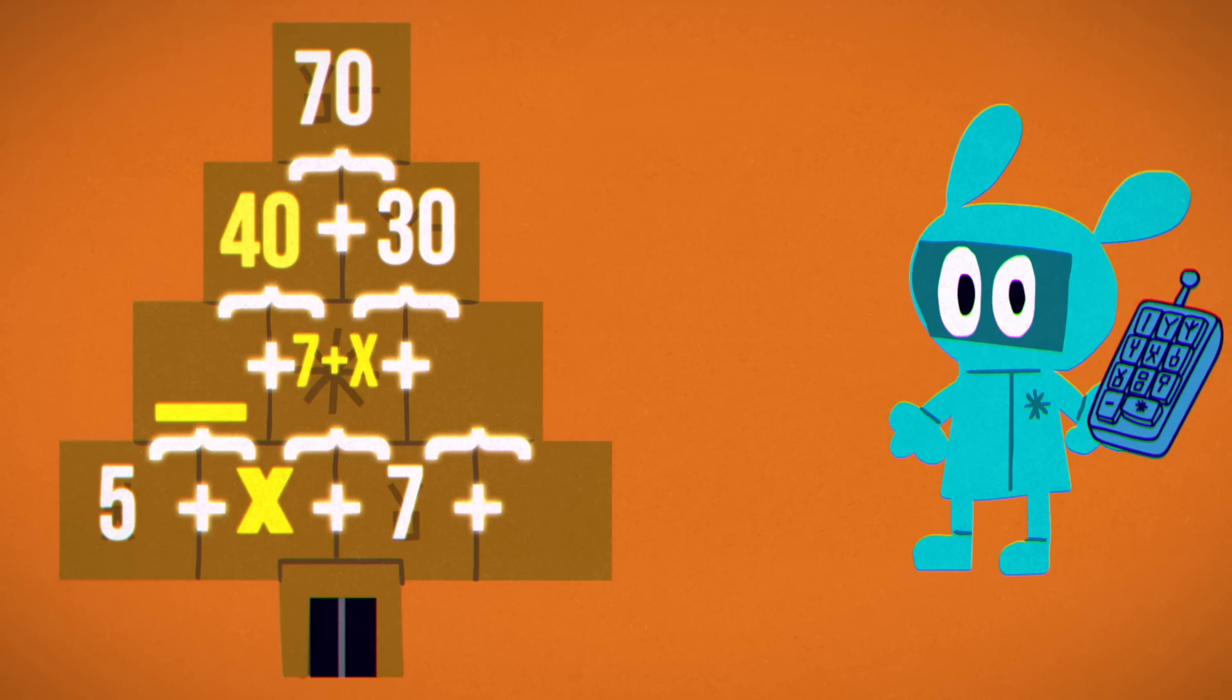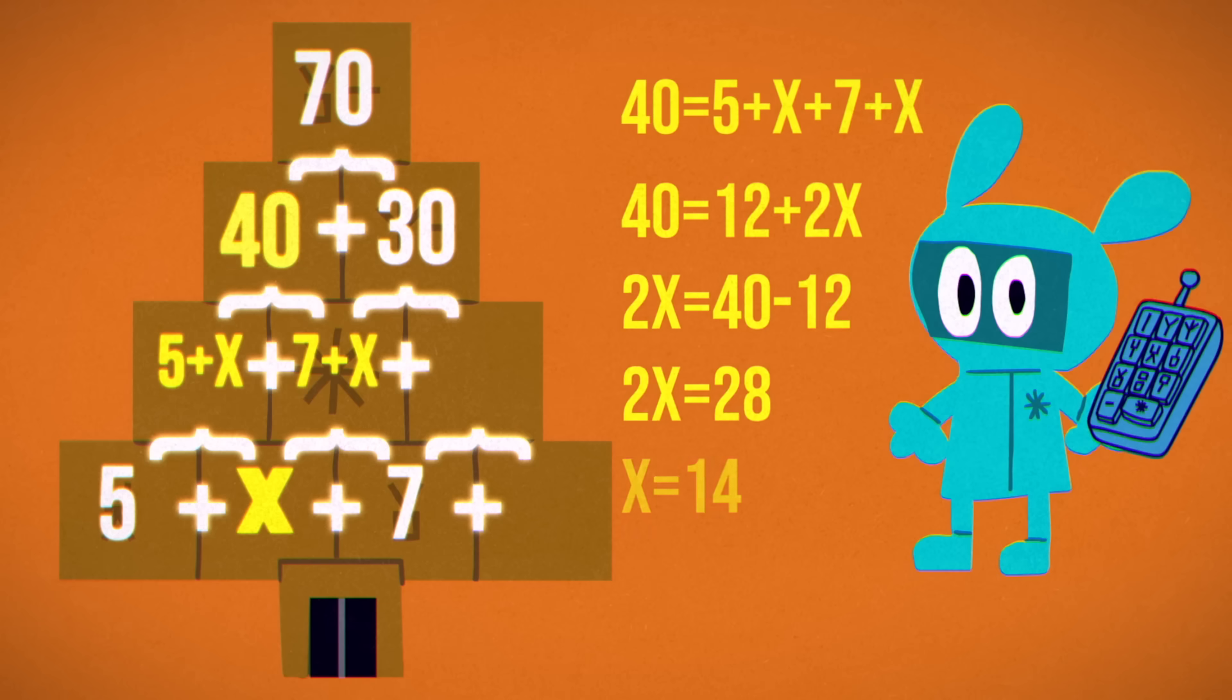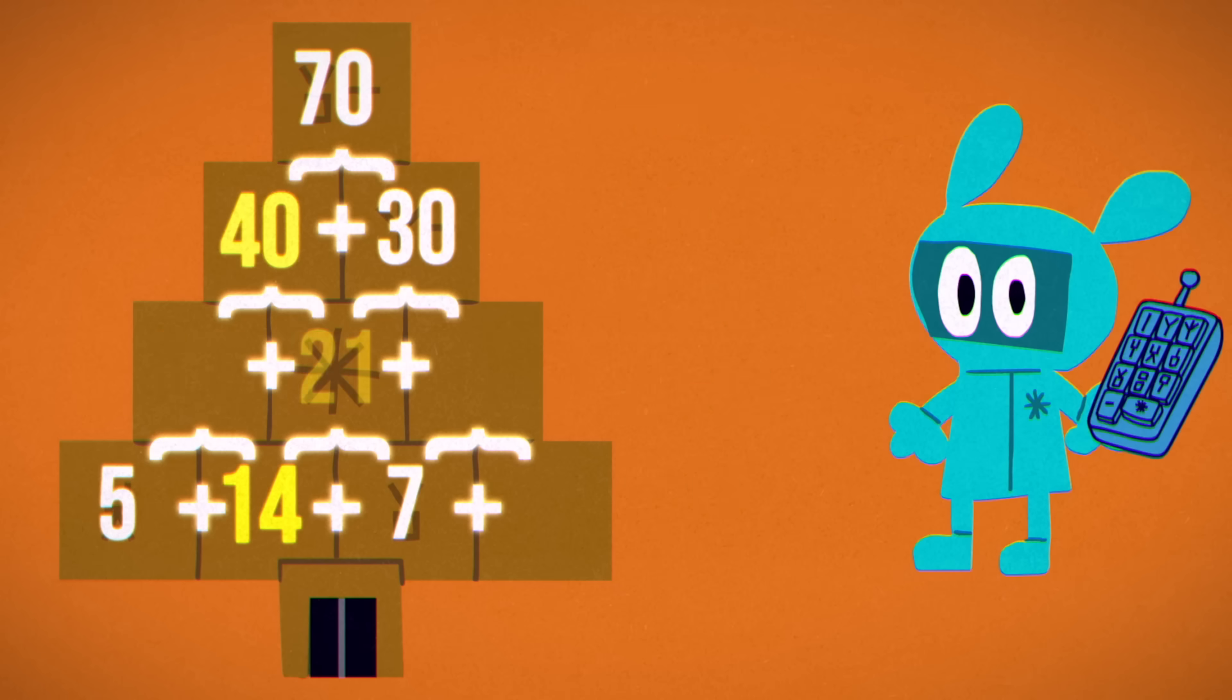The number to the left of the center number is 5 plus x. Therefore, this block, 40, is equal to 5 plus x plus 7 plus x. Solving for x, x must be 14, making the central block 21.